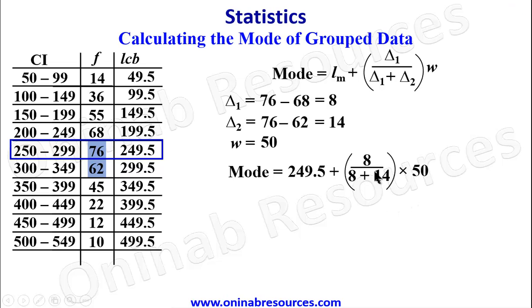So we are going to simplify the brackets, then multiply by 50. So we now have 249.5 plus 18.18 to two decimal places. Then summing up this, we have 267.68 as the mode.